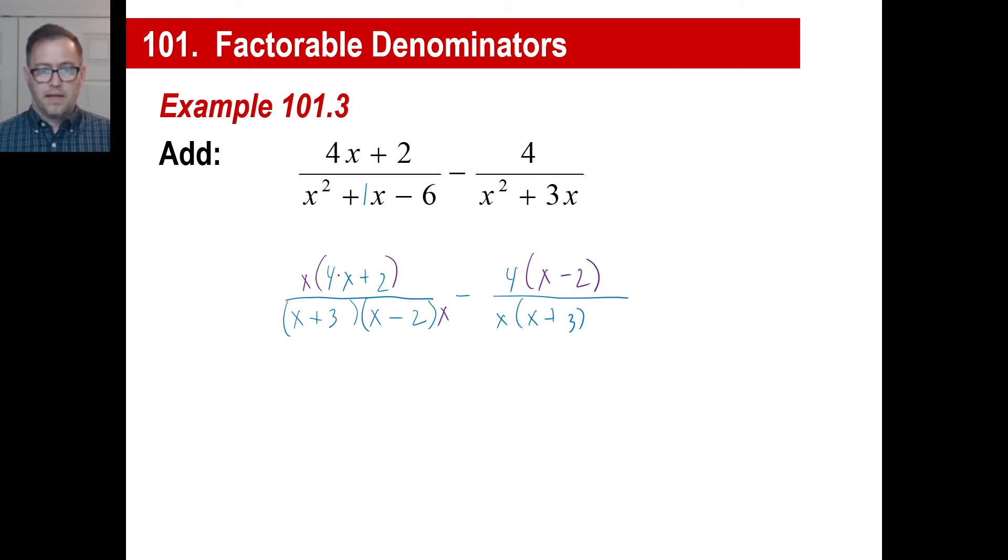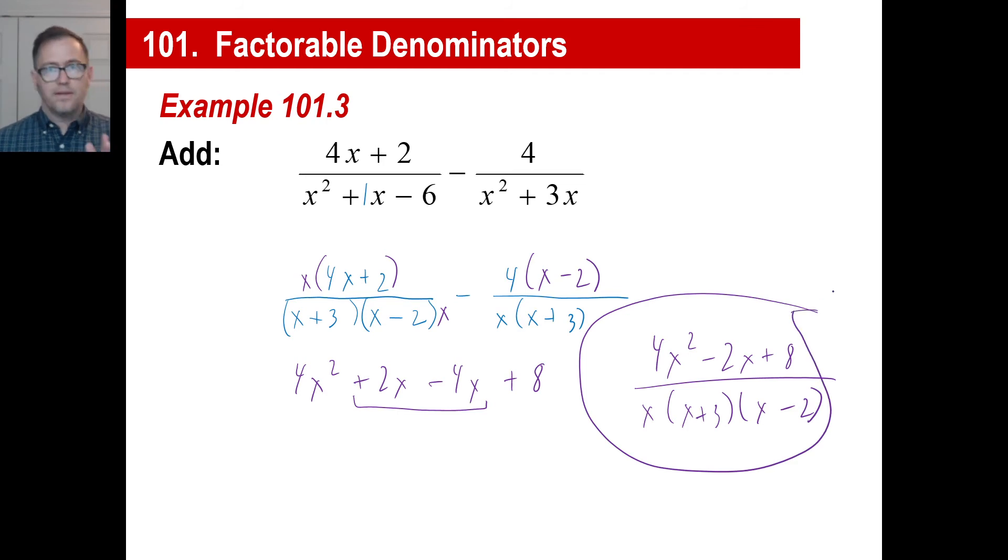We know we're going to need the x in all three, in both denominators. We're going to need the x plus 3 in both denominators. We're going to need all right, we'll multiply this by x, and we'll multiply this by x as well, the whole thing. This one needs to be multiplied by x minus 2. So there it is, x minus 2. Let's try the top here. x times 4x is 4x squared plus 2x. Then we have minus 4x, and then minus 4 times, wait a second, negative 4 times negative 2, that'll be a positive 8 this time.